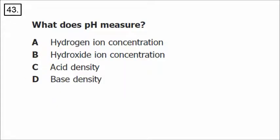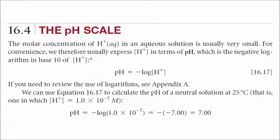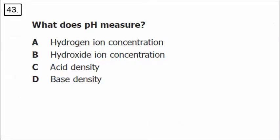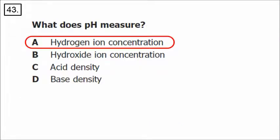Number 43: what does pH measure? pH has to do with the molar concentration of H+. It is the negative logarithm in base 10 of the concentration of H+ — the hydrogen ion concentration is what pH measures. The hydroxide ion concentration is measured with pOH. pH plus pOH is always equal to 14.